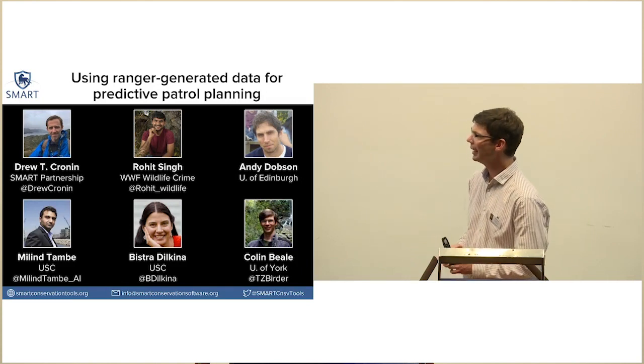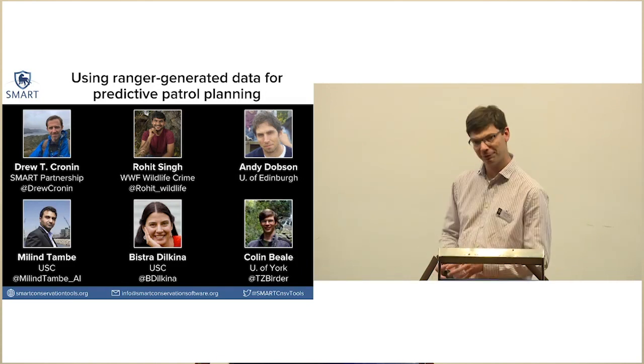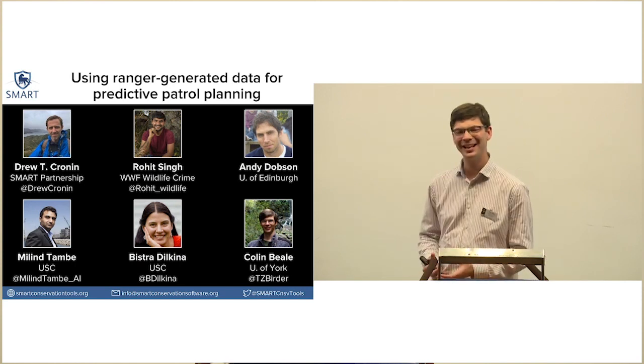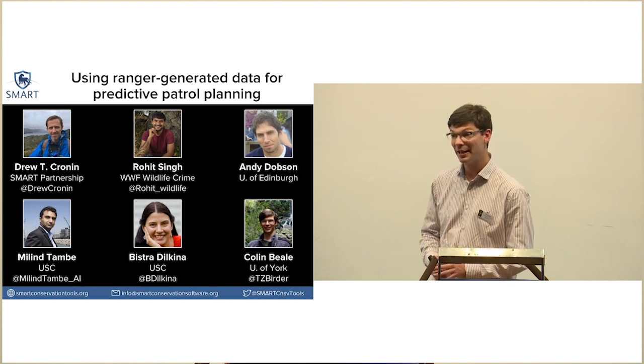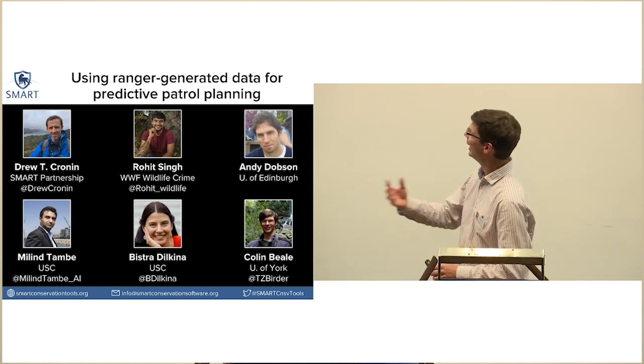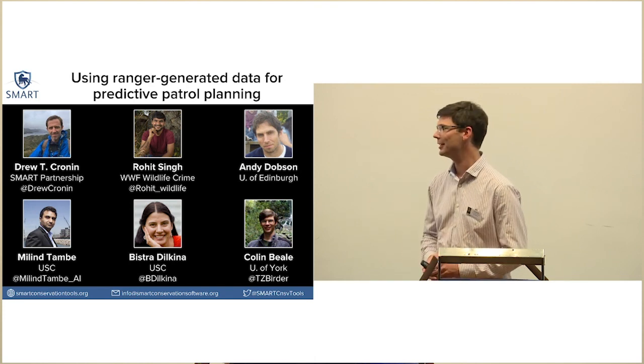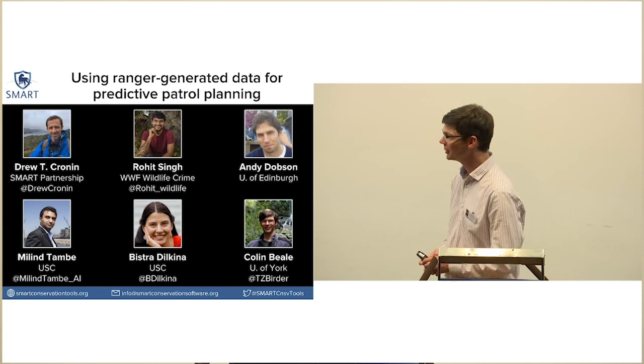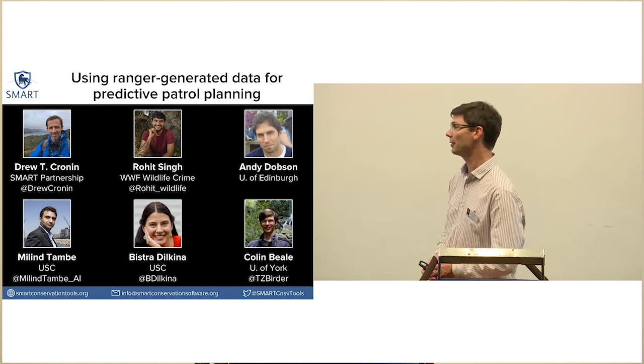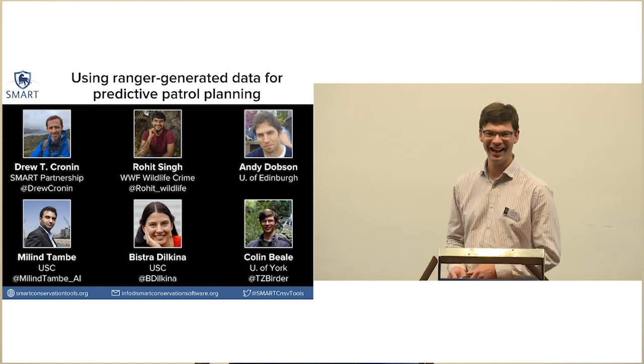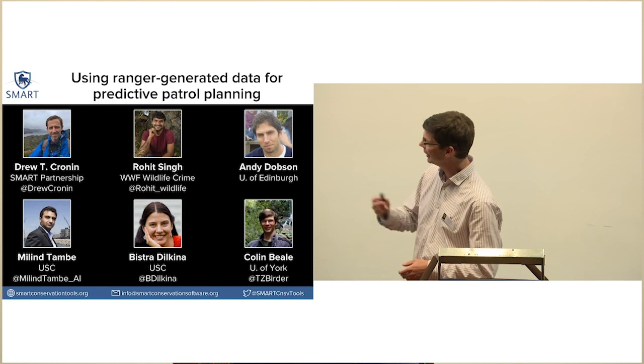Next we've got Drew Cronin who is actually employed by the SMART Partnership in New York, fresh off a plane. Andy Dobson is from the University of Edinburgh and has been working on the more theoretical side of dealing with ranger-based data. And then we've got Bistra and Milind from the University of Southern California, also fresh off a plane. They're going to be telling us about some of the work they've been doing as computer scientists with the artificial intelligence side of things. Right at the far end is Rohit who works for WWF and implements a lot of these things, works with rangers in the Far East. I'll hand over to Drew to kick us off.